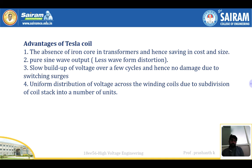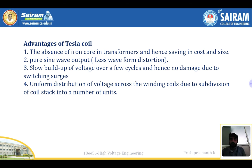Advantages of the Tesla coil: First, the absence of an iron core in the transformer reduces cost and size — the transformer becomes smaller, and costs related to core material, core insulation, and manufacturing are all reduced. This also reduces core losses and increases efficiency. Second, a pure sine wave output with less waveform distortion — no harmonics are present. Third, slow build-up of voltage over a few cycles means no damage due to switching surges.